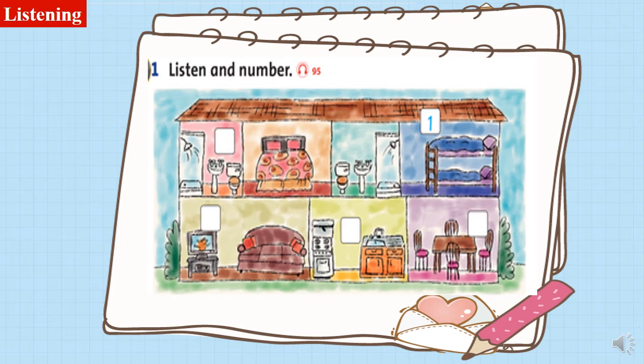Listening. Now we will listen and number. Look, this is my house. It has an upstairs and a downstairs. Upstairs, you can see two bedrooms. Also upstairs, you can see two bathrooms. Downstairs, there is a kitchen. Look, this is the living room — it has a TV and a sofa. And here is the dining room. The family can eat here.